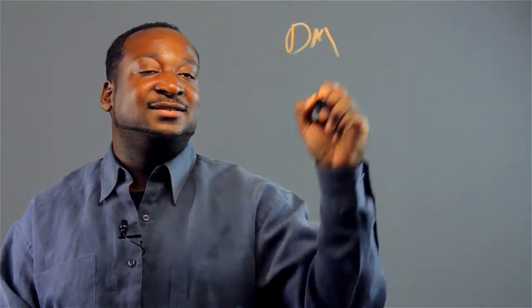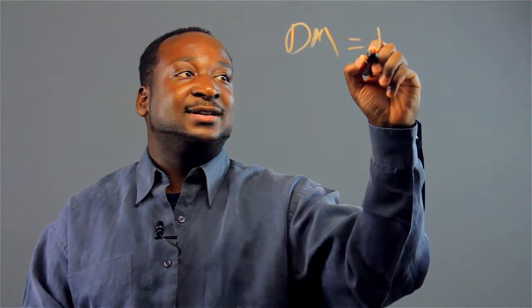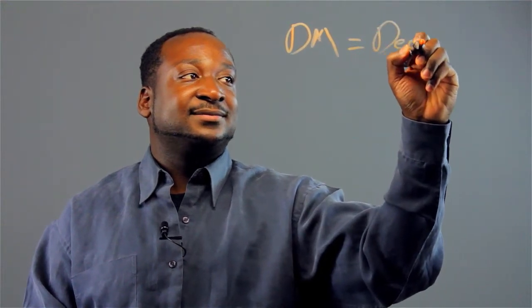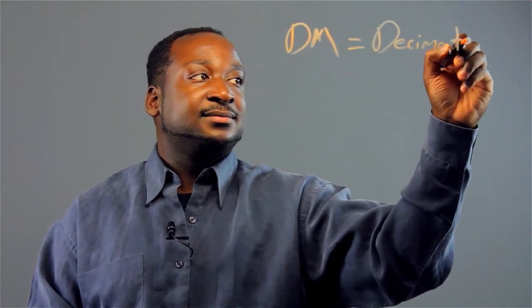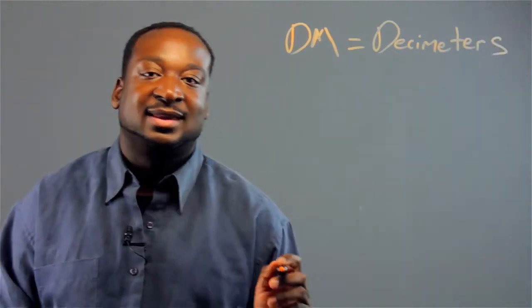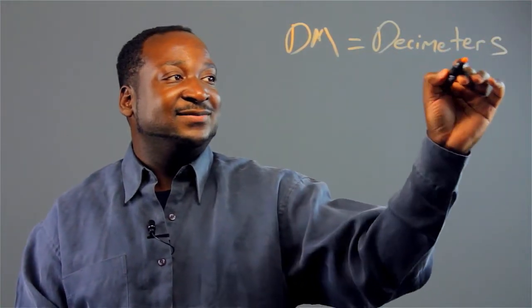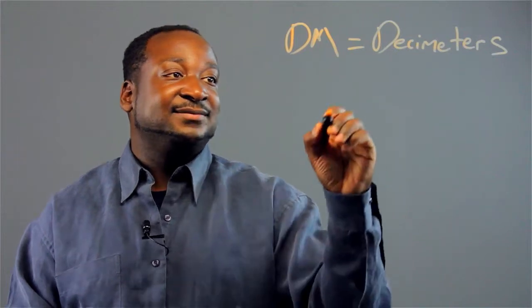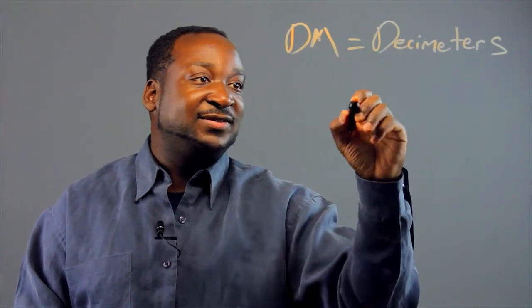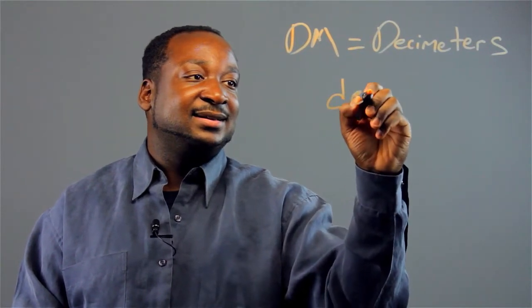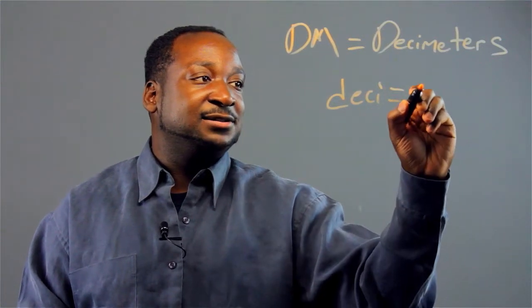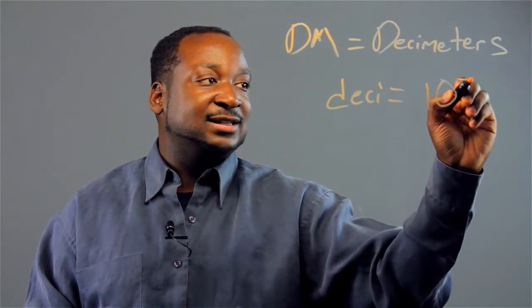Now DM is an abbreviation which stands for decimeters. And we know that meters is a unit of measurement. The prefix deci is equivalent to 10 to the negative 1.